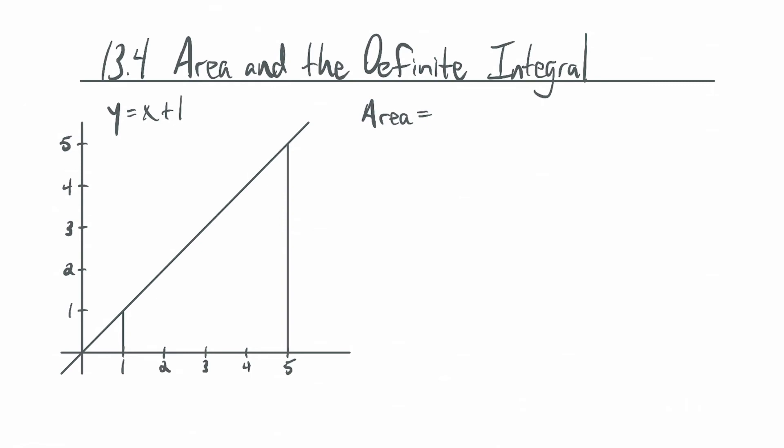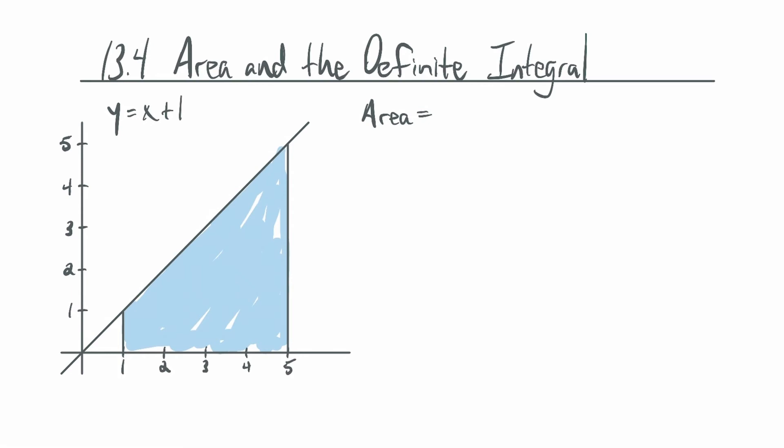Let's say we have the graph of a function y equals x plus 1, and we want to talk about the area of the region between the graph and the x-axis on some interval—in this case the interval from 1 to 5. This is a trapezoid. So if we wanted to find this area, there's a formula. You know this length and this length and how tall—in air quotes—the trapezoid is on its side.